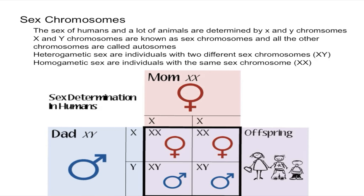One last thing to briefly mention is that on the Y chromosome there's a gene called the SRY gene, or sex-determining region Y. It's a gene located on the Y chromosome that essentially acts as a trigger that will cause the embryo to become a male. So without that gene, you have a female. We'll talk about that more in future videos.